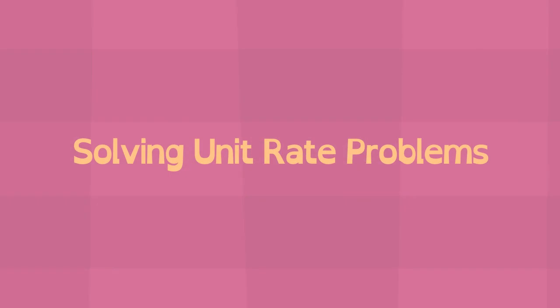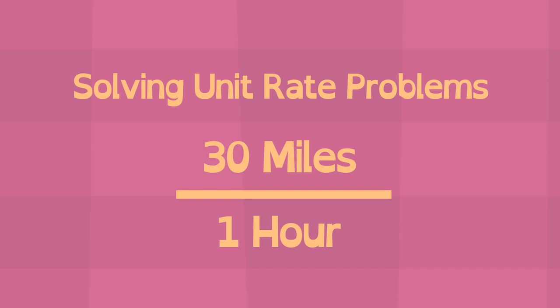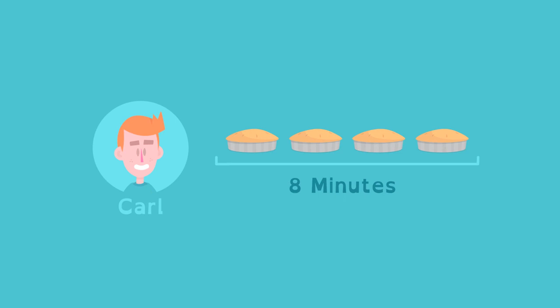Solving unit rate problems. Unit rate is a ratio of two measurements where the second measurement, or unit, is one. Kate and Carl have entered a pie eating contest. Carl can eat four pies in eight minutes.